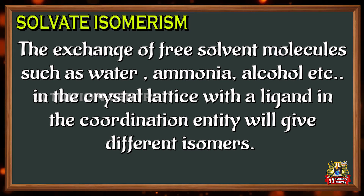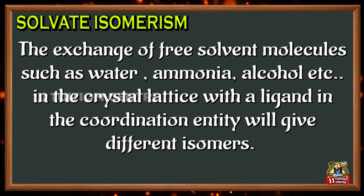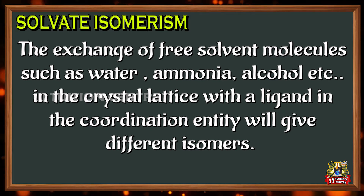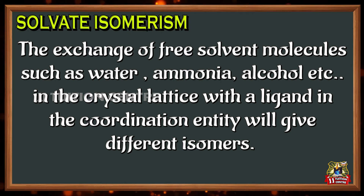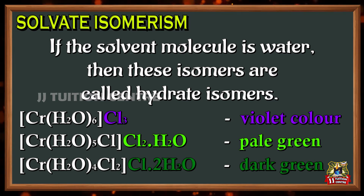Solvate isomers: the exchange of free solvent molecules such as water, ammonia, alcohol, etc. in the crystal lattice with a ligand in the coordination entity will give different isomers. These types of isomers are called solvate isomers. If the solvent molecule is water, then these isomers are called hydrate isomers.